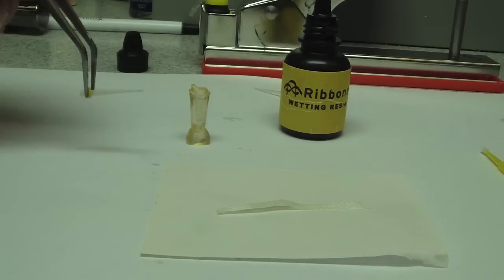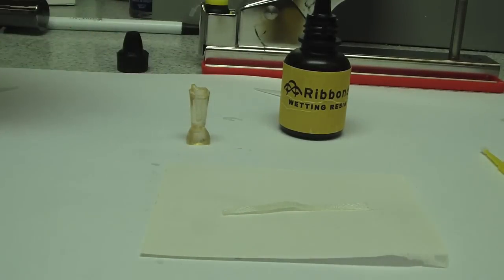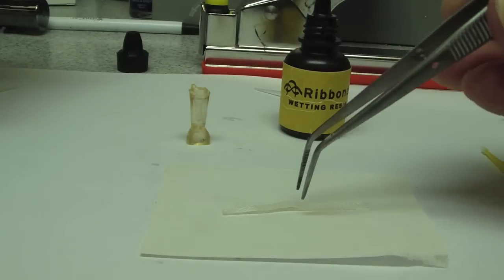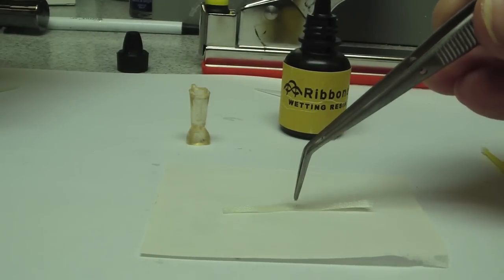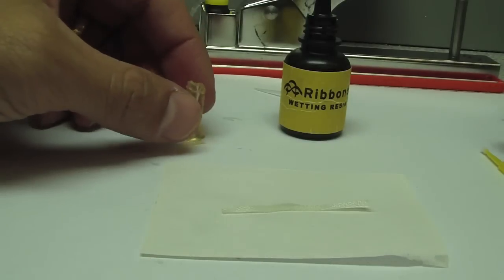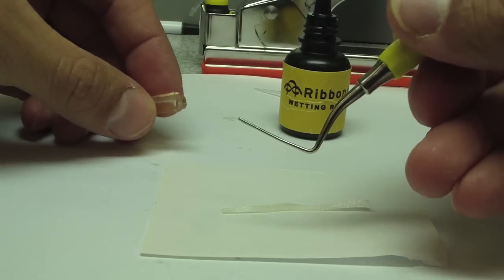We're trying to create a monoblock structure between the post and core, so we won't have two distinct phases, we'll just have one monoblock post and core, similar to a cast post and core. Additionally, we're trying to reduce the amount of shrinkage of resin when we use composite resin into the canal.